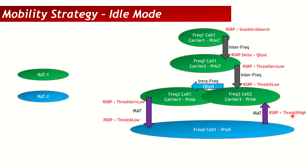When a user on the lower priority RAT needs to return to the higher priority frequency, we use threshold-x-high. This is a single parameter: irrespective of the serving cell coverage, the user will move to the higher priority frequency as soon as that frequency's RSRP is above threshold-x-high. Critically, threshold-x-high should always be higher in value than threshold-serving-low, otherwise ping-pong will occur.